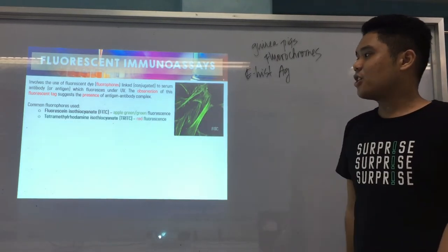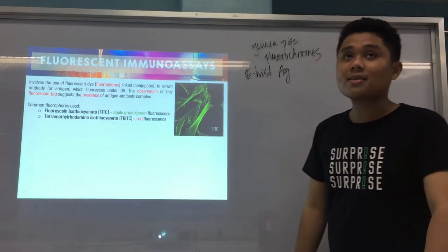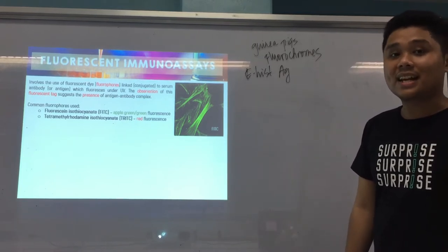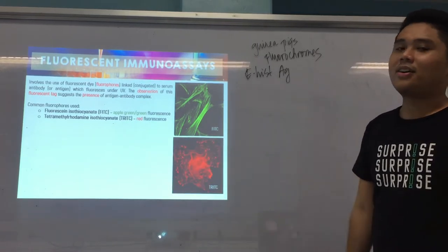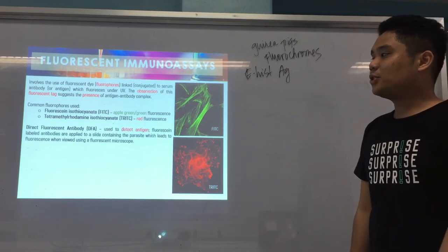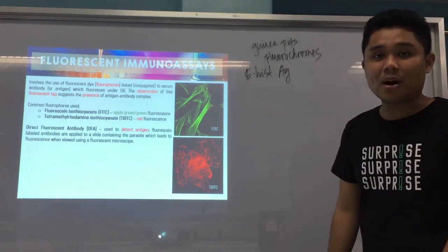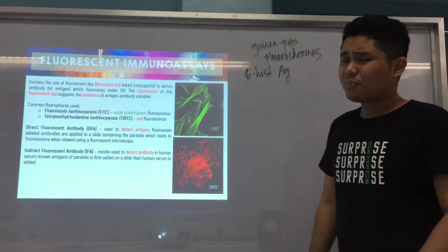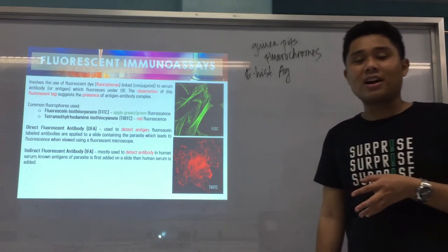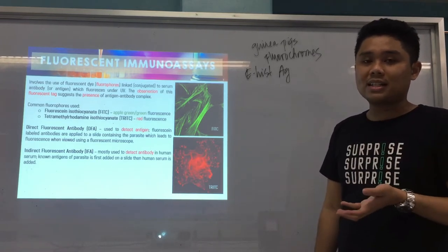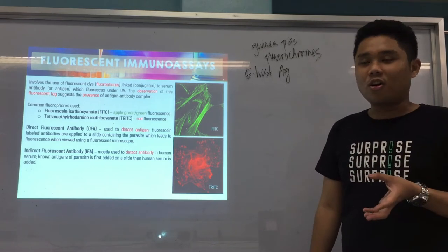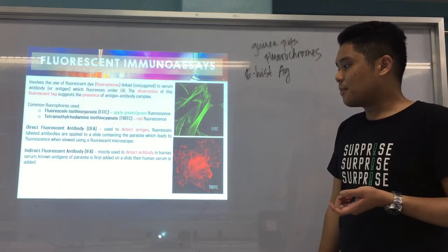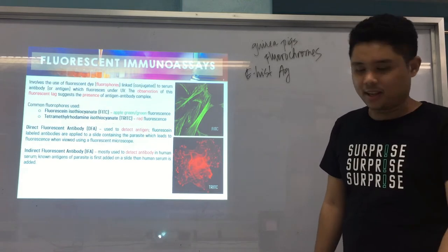We also have TRITC — tetramethyl rhodamine isothiocyanate — which emits a red fluorescence. There are two ways: the direct fluorescent antibody test and the indirect fluorescent antibody test. For the direct fluorescent antibody, or direct immunofluorescent assay, we detect antigen. For indirect immunofluorescent antibody, we detect antibodies.